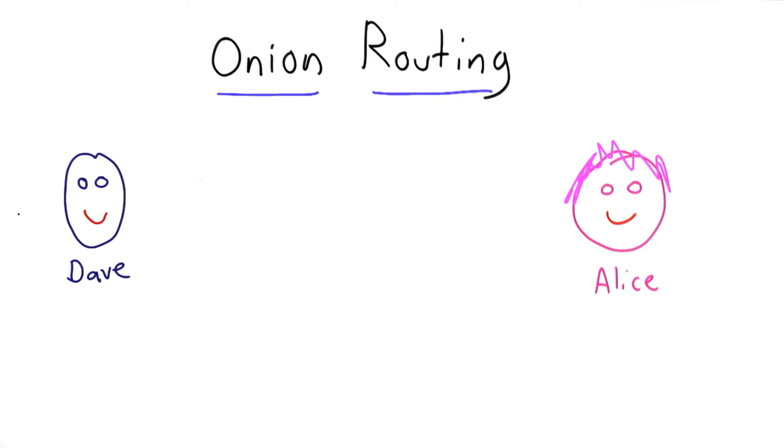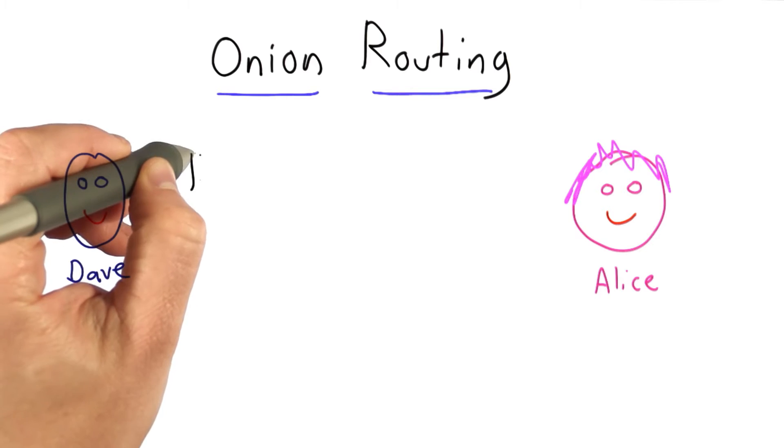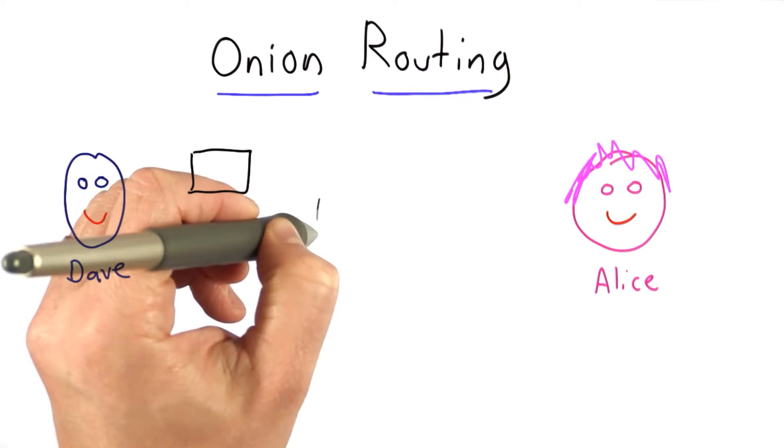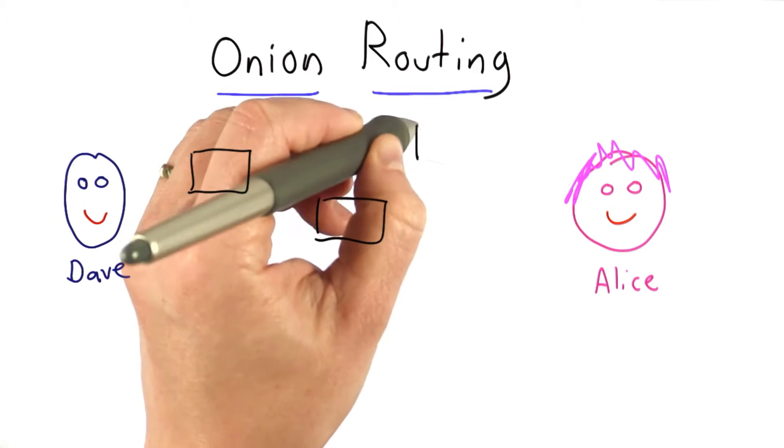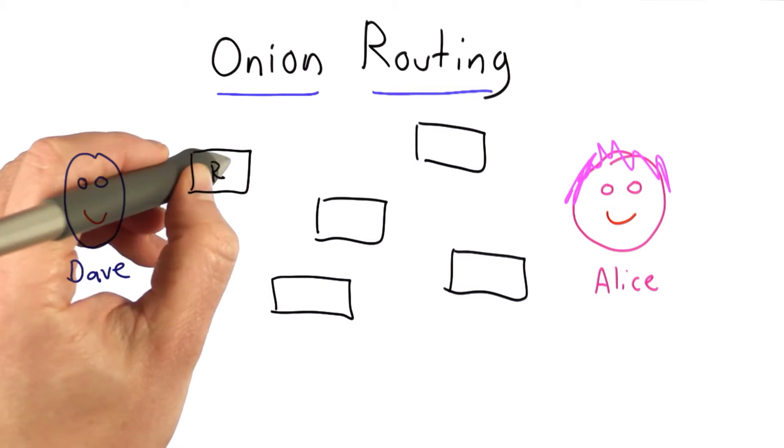So now Dave wants to communicate with Alice without anyone being able to know they're communicating, and we have a set of routers. These are like our friends in the example of the envelopes, and let's say I know about 5 routers.